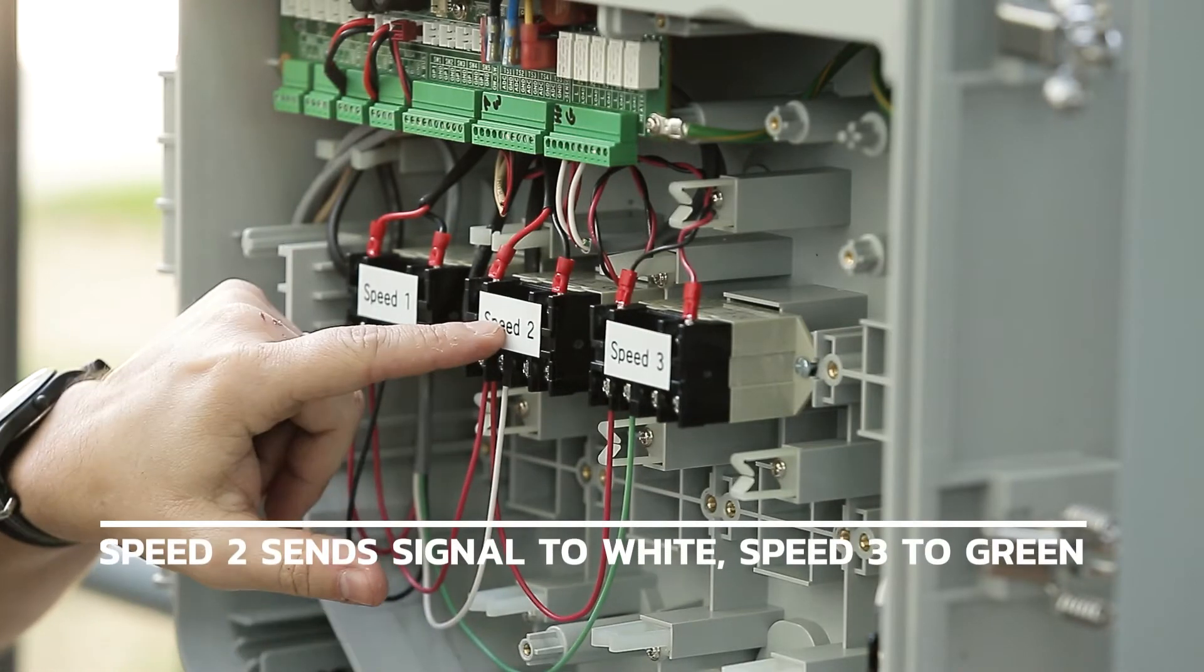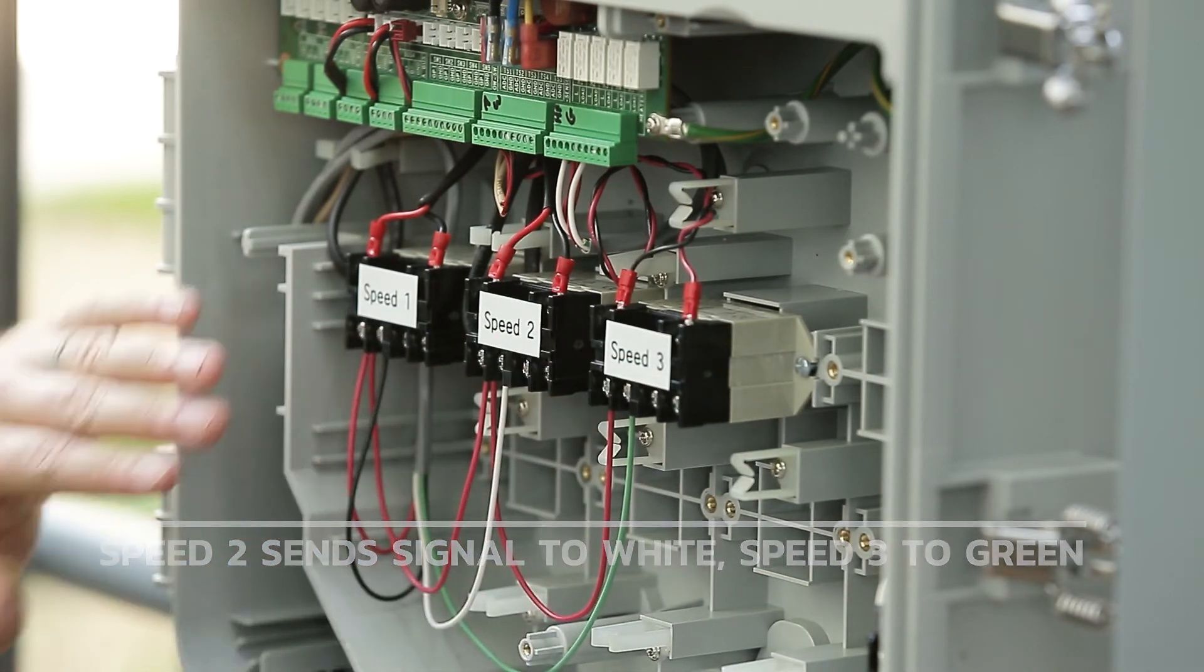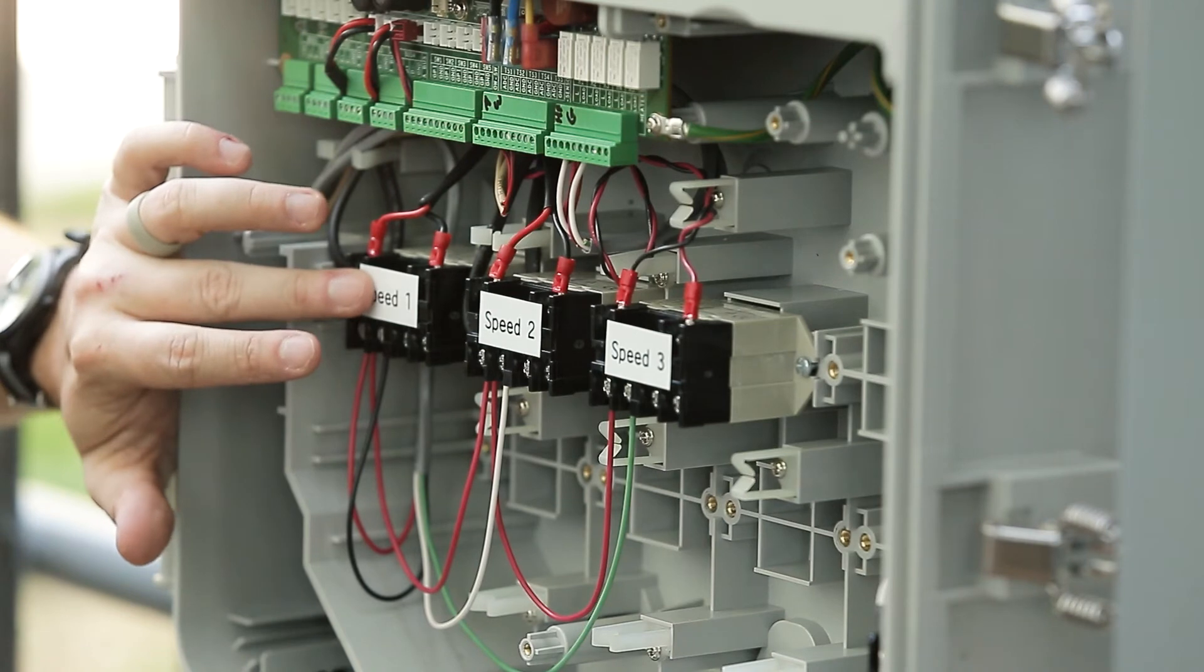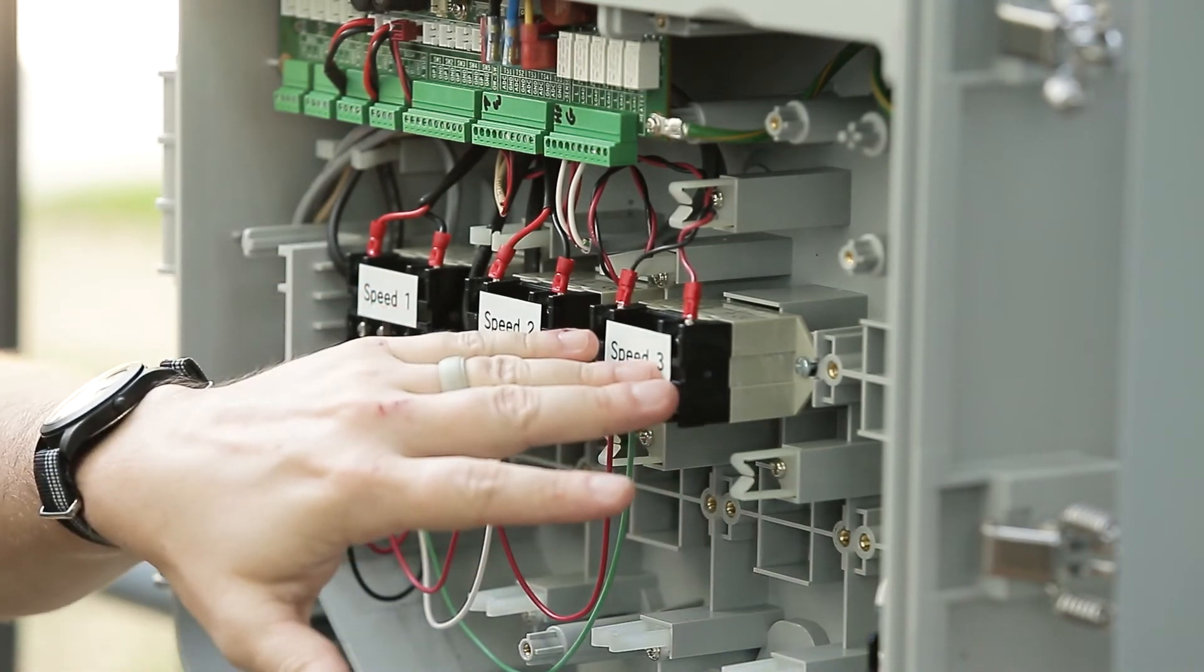Same thing for the white wire for speed 2 and the green wire for speed 3. So these can then be set up. It's different for every automation brand. Most of them you'll set them up as like aux 2 and aux 3.